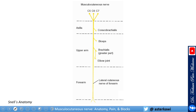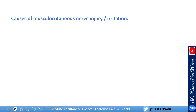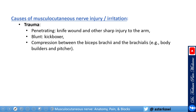Regarding how this nerve pain presents — first, let's briefly review potential causes of musculocutaneous nerve injury or irritation. Trauma is the most common cause. It can be penetrating, like a knife wound in the arm, or blunt, such as in kickboxers — there are case reports — or compression in the interfascial muscle plane between the biceps and brachialis, which can also occur in bodybuilders or pitchers.